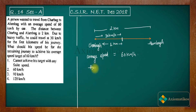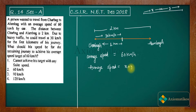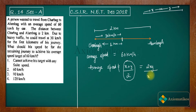Now, the formula for average speed that I want to highlight: if someone is moving from here to here at x km per hour, and from here to here at y km per hour, you might think the average speed is simply (x + y) / 2. But do NOT make this mistake in your exam — that is NOT the average speed formula. The correct formula for average speed when equal distances are covered is 2xy / (x + y).